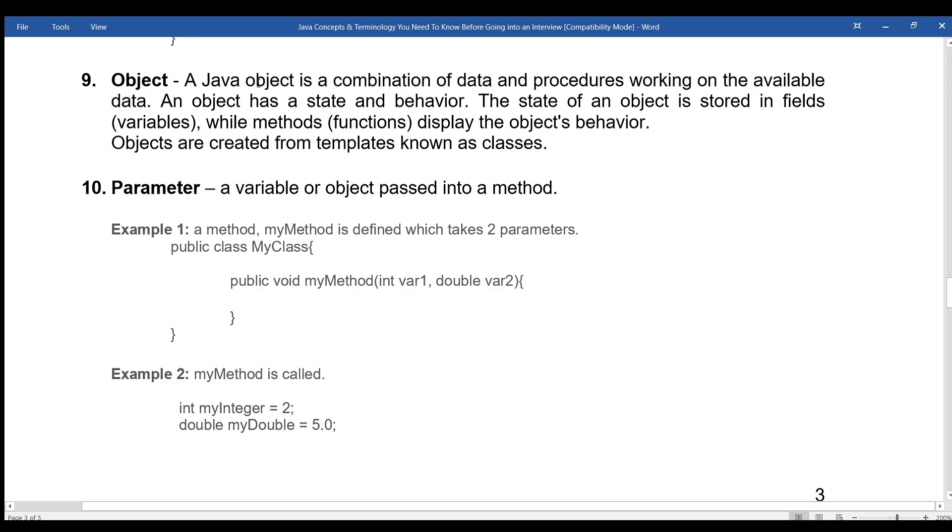Object: A Java object is a combination of data and procedures working on the available data. An object has a state and behavior. The state of an object is stored in fields (variables), while methods (functions) display the object's behavior. Objects are created from templates known as classes.